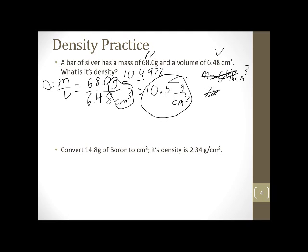Now here. Convert 14.8 grams of boron to cubic centimeters. Its density is 2.34 grams per cubic centimeter. So cubic centimeter is volume. I have to calculate the volume. I know the mass and I know the density. So if I have the formula D = M/V, I want the volume. So I got to get the volume up at the top. If I do a little cross multiplication, I'll end up with V = M/D. I know a mass. I know a density. And what I want to calculate is my volume. Excellent.